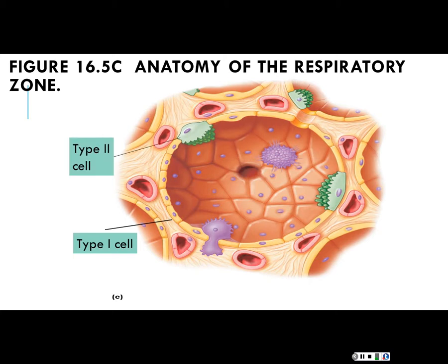The type 2 cells are shown in green. They also line the alveolus, but their main job is to secrete pulmonary surfactant, whose job is to reduce surface tension and prevent collapse. Your pulmonary surfactant comes from the type 2 alveolar cells.